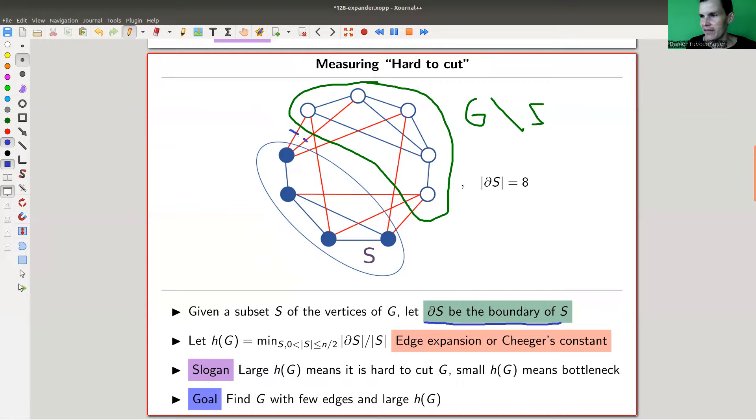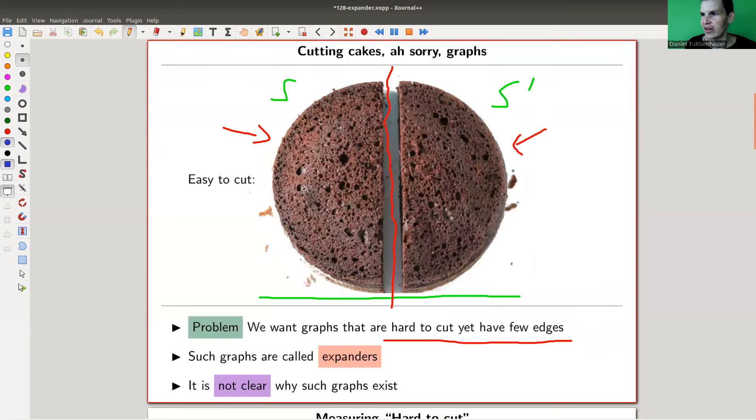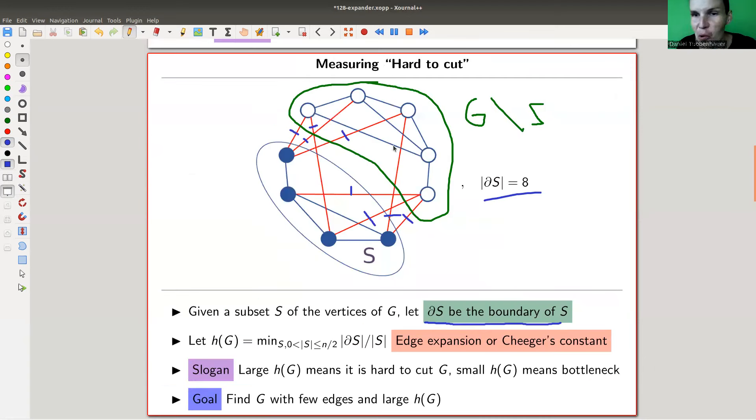And the measurement of how hard this is to cut is what's called the boundary. And the boundary are just all the connecting edges between S and G\S. And the numbers of the boundary is just the number of the boundary. So the connecting edges here are eight in total, I have eight connecting edges. So cutting S from G, from S, G like in this picture here.